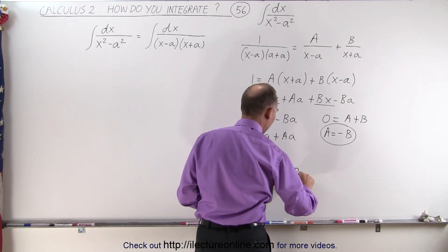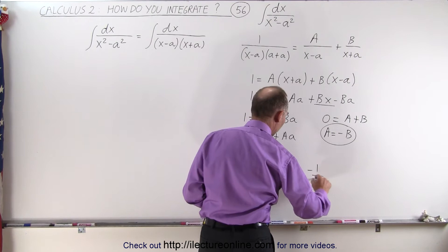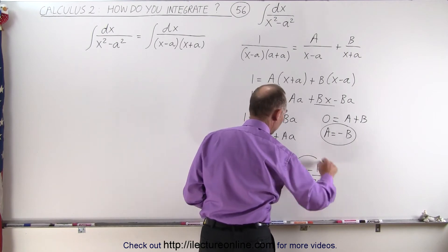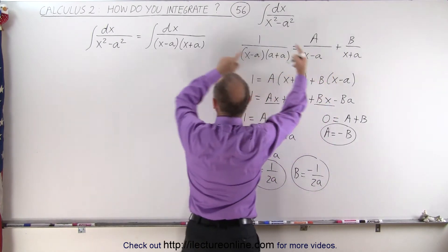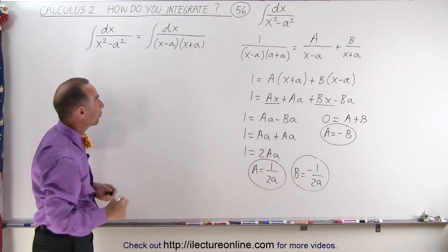And then B, of course, since it's the negative of that, would be minus 1 over 2a. And those two can then be substituted back in here and rewrite this equation as follows, or this integral as follows.